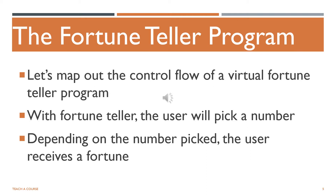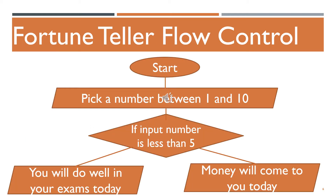In this video we'll take a look at the control flow of a virtual fortune teller program. The user will pick a number between 1 and 10, and depending on the number picked, the user will receive a fortune. This diagram maps out the control flow of our program. Notice, everything is not sequential. The circle represents the start, the parallelogram represents input or output, and the diamond represents the decision, which determines which print statement — or fortune — is run.